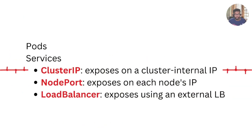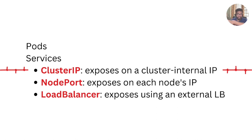In Kubernetes, everything is a pod. We can spin up pods, deploy our services in a pod, and expose those pods. But in Kubernetes, pods are temporary — they come up and down arbitrarily — so it is unreliable to point traffic directly to a pod. That's where another abstraction called Services comes in. A Service is used to expose external traffic to a pod through cluster IP, node port, and a load balancer, which can even be configured to direct traffic to your services externally.